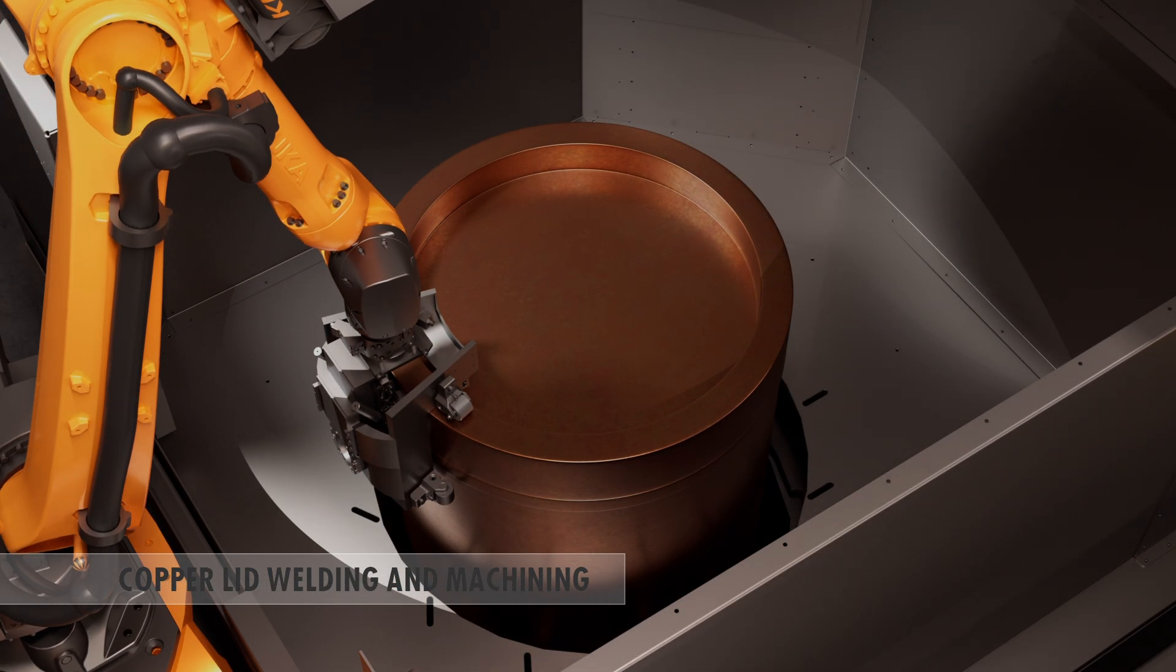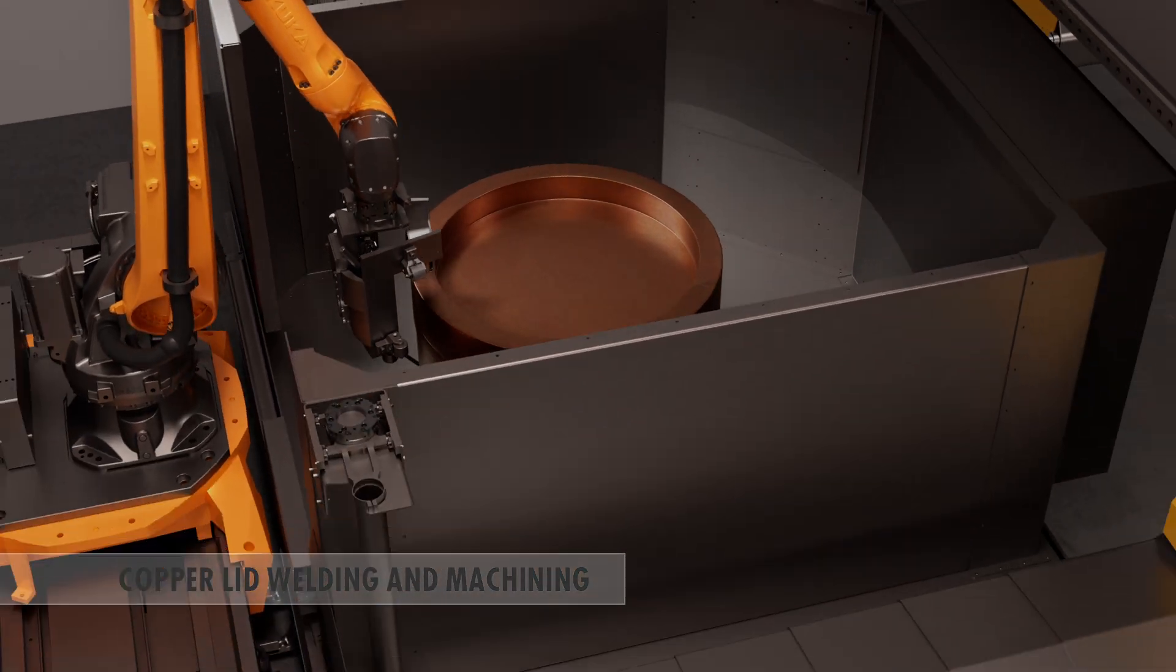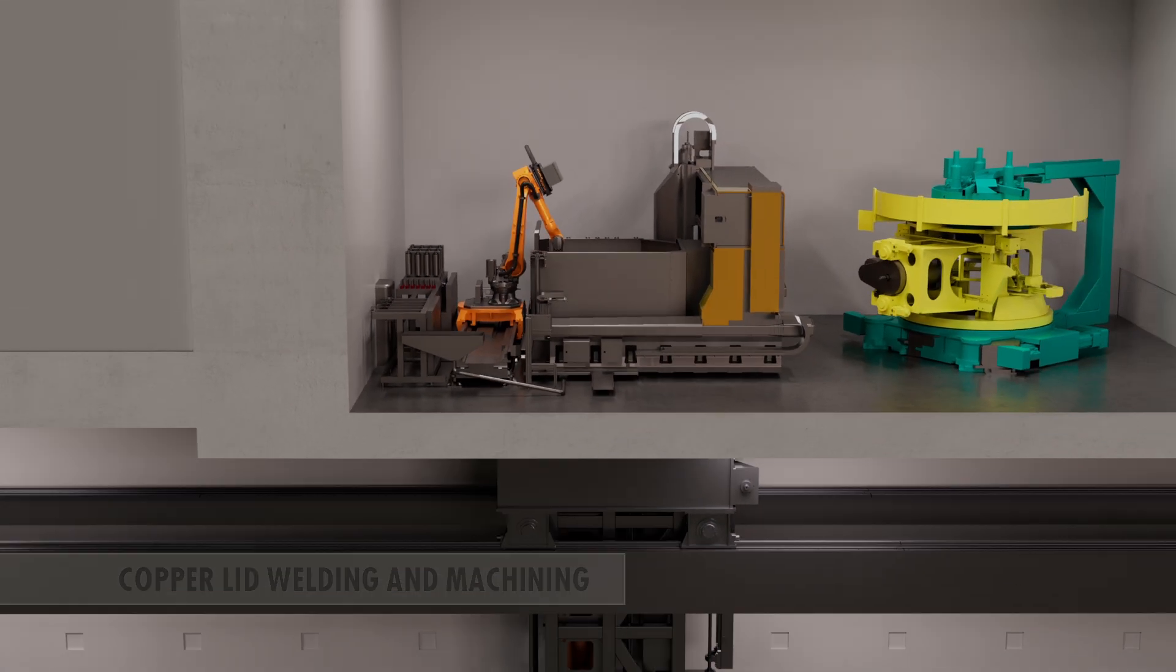Once the weld has been shown to be compliant, the canister can be moved further along the process. If the weld is defective, the canister can also be machined open at the machining station, if necessary.